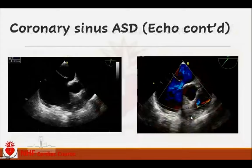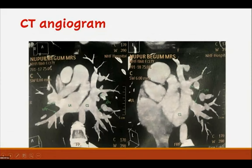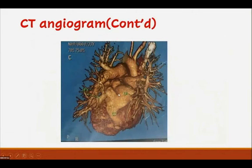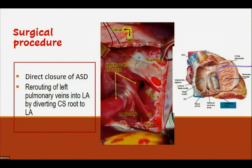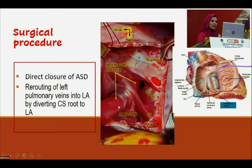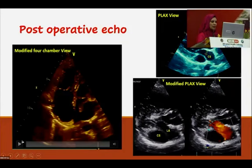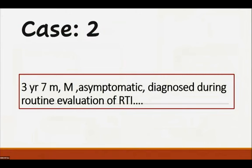Transesophageal echo confirmed the secundum ASD with left-to-right shunt. CT angiography confirmed the communication between the left atrium and coronary sinus, and the anomalous left-sided pulmonary vein draining to the coronary sinus. 3D CT reconstruction confirmed all findings. At surgery, the surgeon confirmed the coronary sinus anatomy. The surgeon directly closed the ASD and re-routed the left pulmonary vein into the left atrium by diverting the coronary sinus roof to the left atrium. Post-operative echo showed no residual shunt; the patient is well on follow-up.